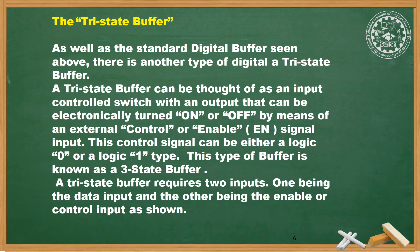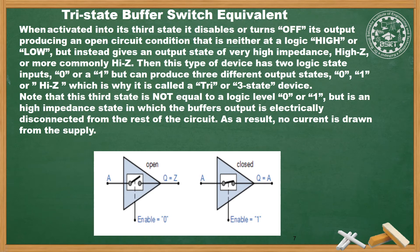A tri-state buffer requires two inputs: one being the data input and the other being the enable or control input. The control signal controls the buffer output. When activated into this third state, it disables or turns off its output, producing an open circuit condition that is neither at logic high nor low.